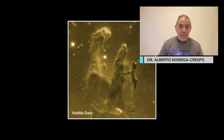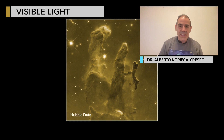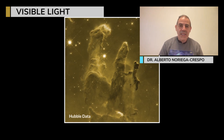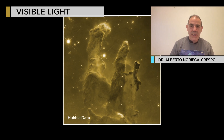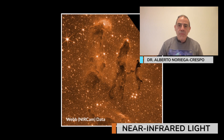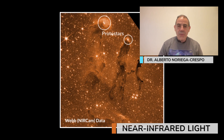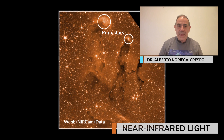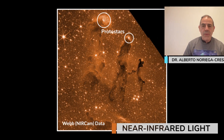In the Hubble images, we don't penetrate the columns — we don't see the stars inside. We see the surroundings illuminated, and perhaps at some of the edges we can see some of the protostars. With infrared images like those from JWST, we begin to see not only the dots but also the protostars, and we can see through some of the columns to where stars are being born.